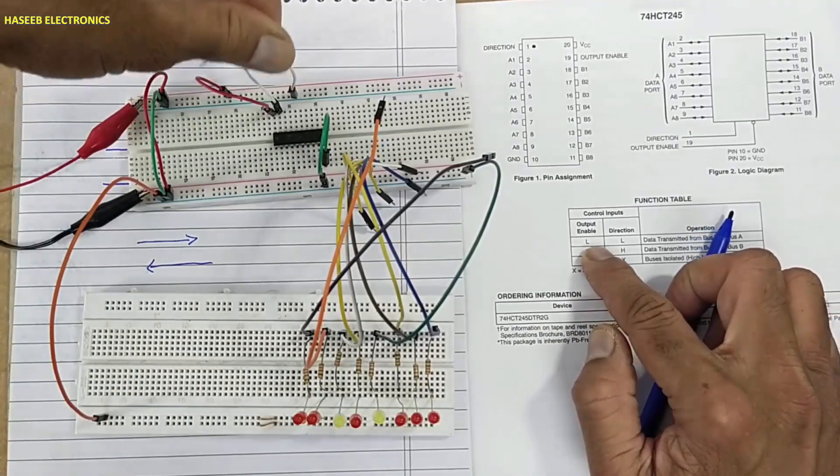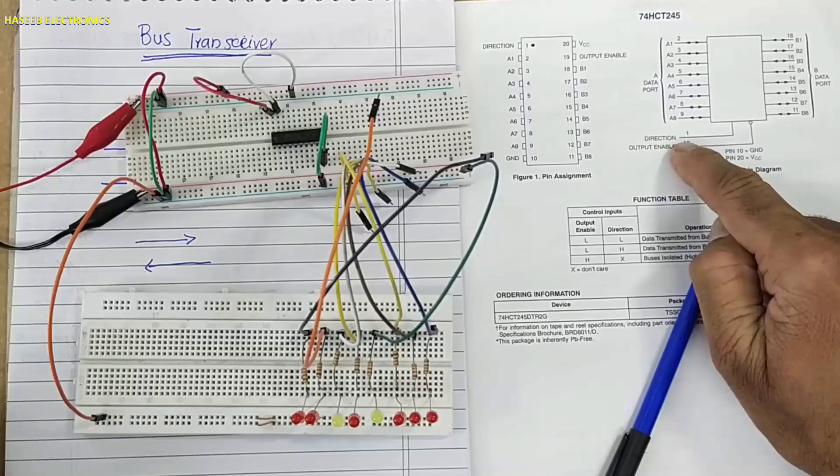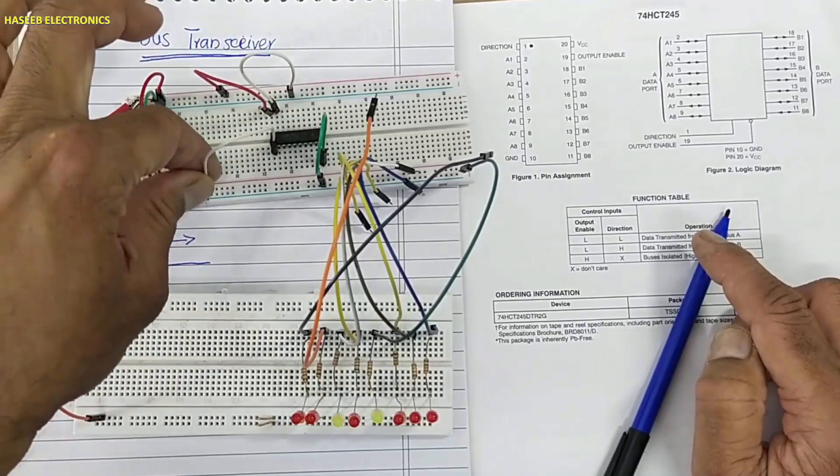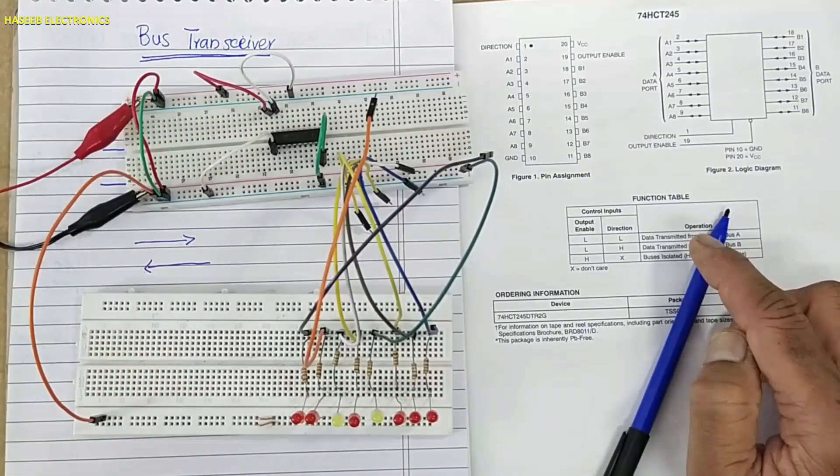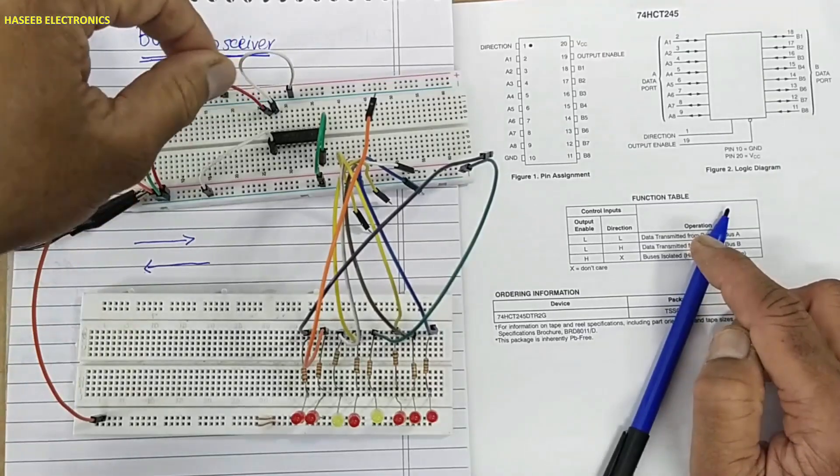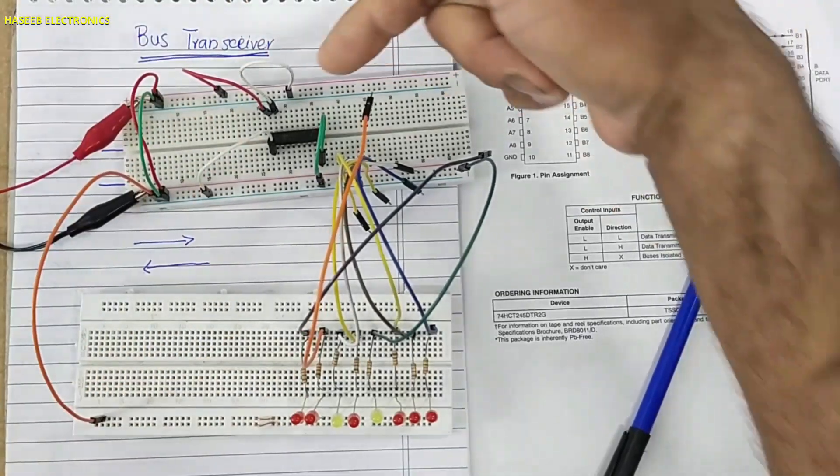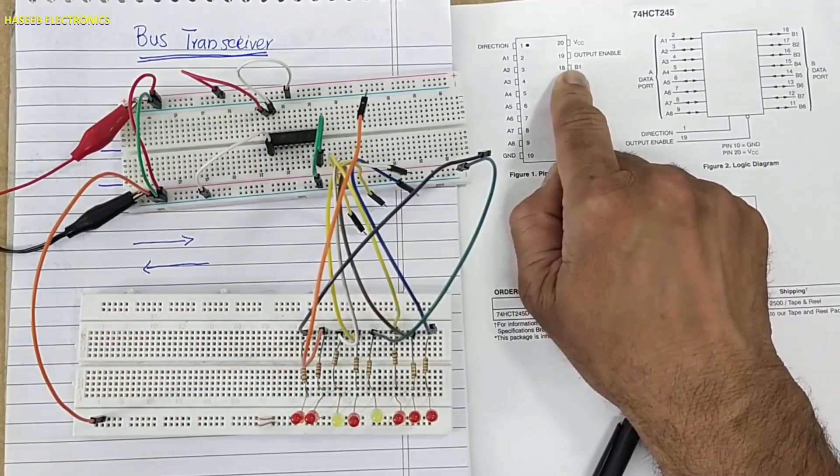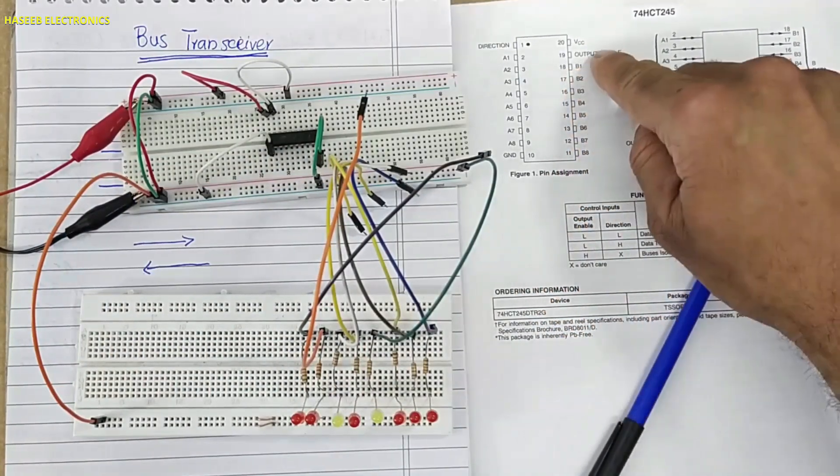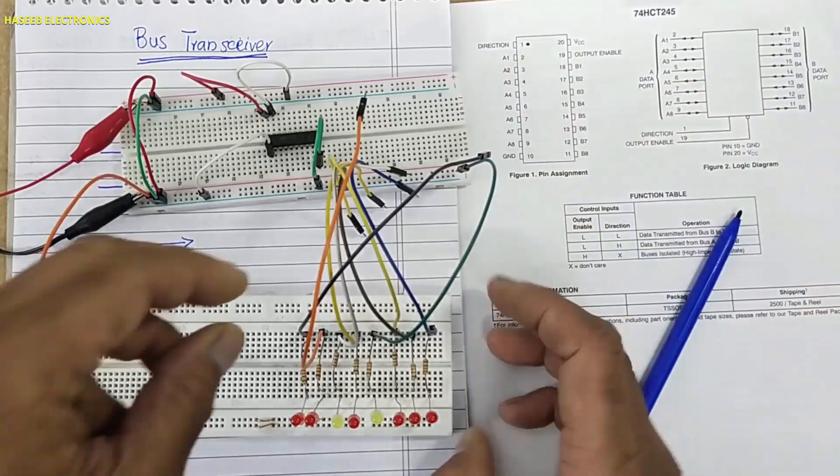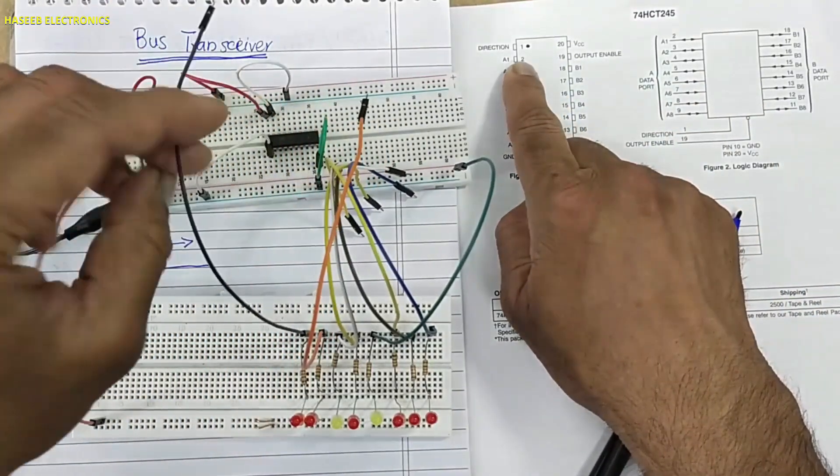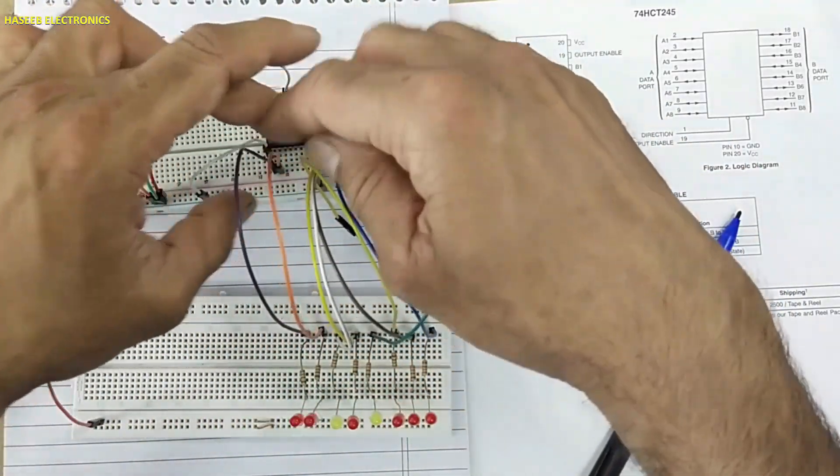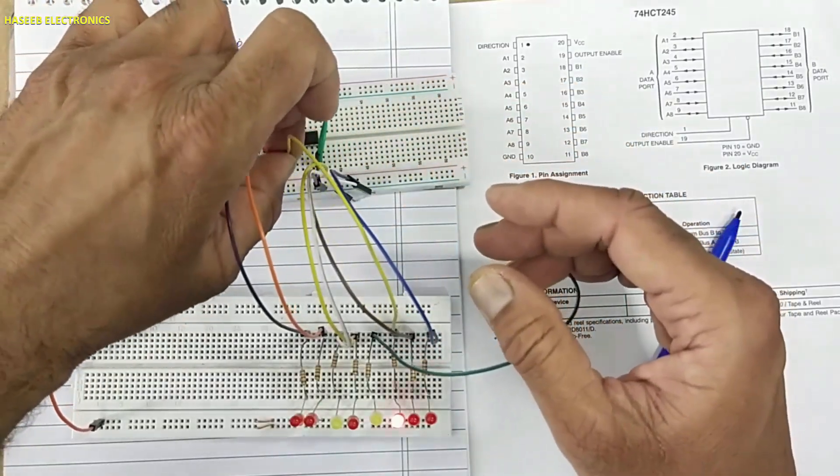330 ohm resistance connected at anode and we will connect cathodes to the ground side when we want to read data. The output enable is connected to low, pin number 19 connected low side. At direction pin, direction pin is pin number 1, it must be connected to low. When we are testing we must take care for the polarity. Now we will apply input at this side and we will read data at this side. We will connect B to low or high, that data will pass to A1. A1 is at pin number 2.